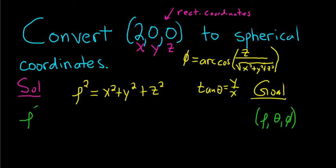Rho squared is equal to, well, x is 2, so that's 2 squared. y and z are both 0, so that's 0 squared plus 0 squared. We end up with rho squared equals 4.